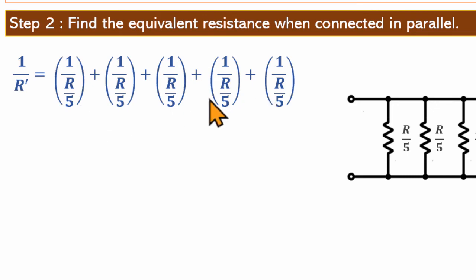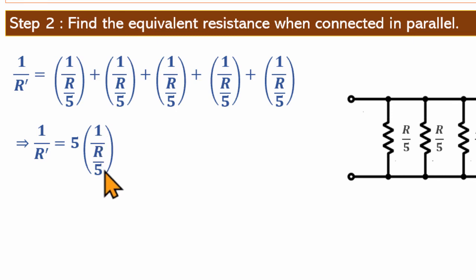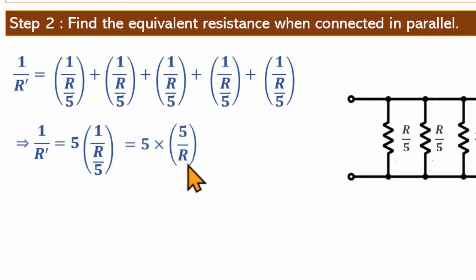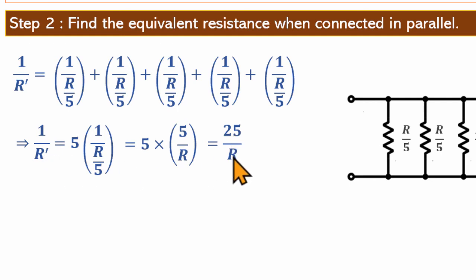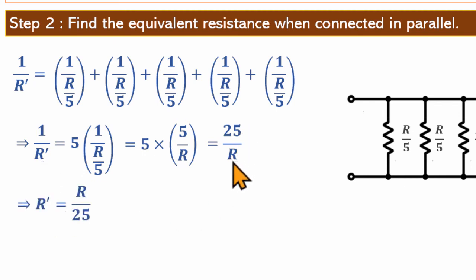Simplifying: each term 1/(R/5) equals 5/R, and there are 5 such terms, so 1/R' = 5 × (5/R) = 25/R. Therefore R' = R/25.